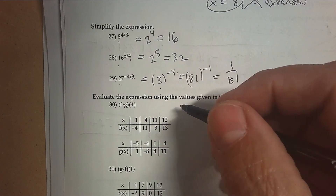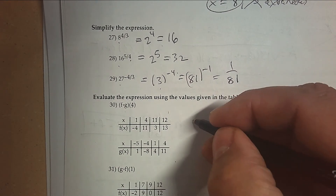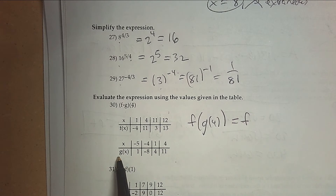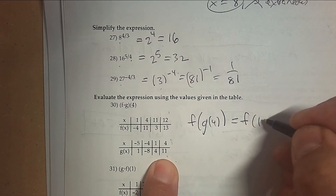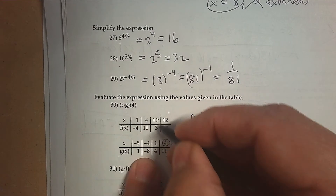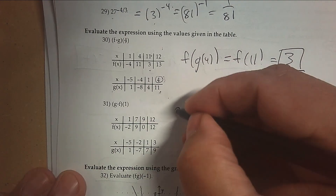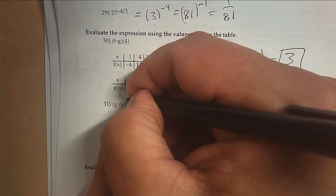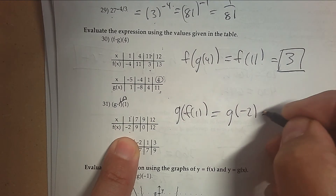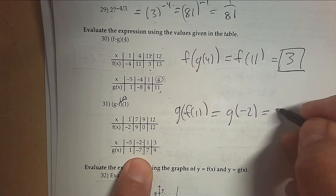Number 30: can you do f composed by g at 4 using this table of values? What it's really telling you is: first plug 4 into g and get an answer. When g is 4, the answer is 11. So read the chart — it's 11 — and then go to f, and when x is 11, the answer is 3. Can you use a table of values? Again, this means first plug 1 into f and get an answer. When x is 1, f is −2. Then take that answer into g: when x is −2, g is −7, and you have your answer.